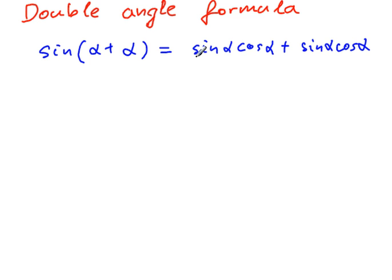So what do you have? Sum of two identical terms. So this is equivalent to two sine alpha cos alpha. Very powerful formula for solving identities. So it's good to know it.